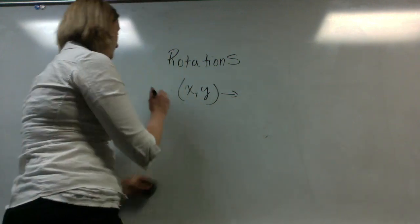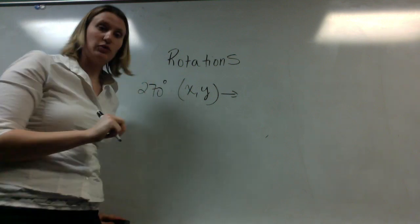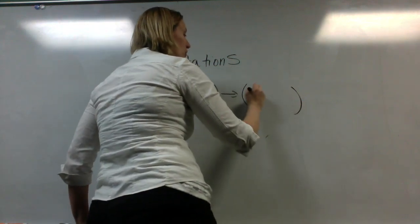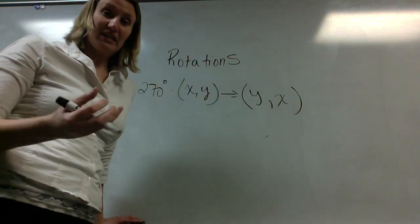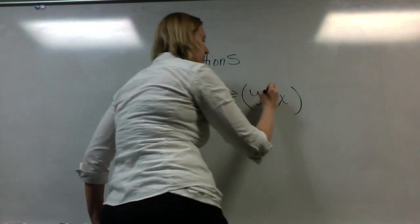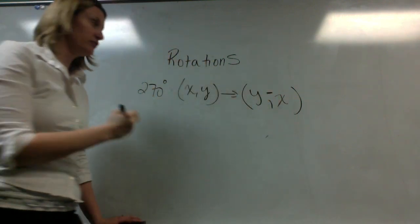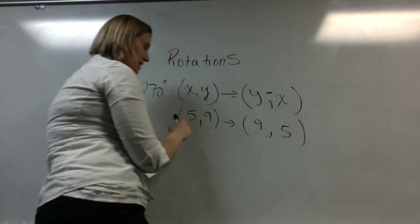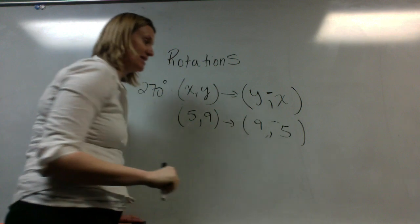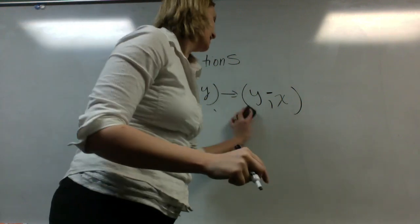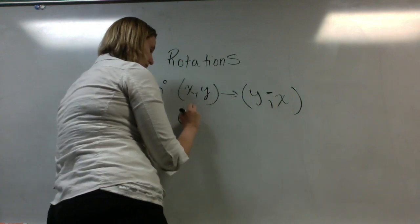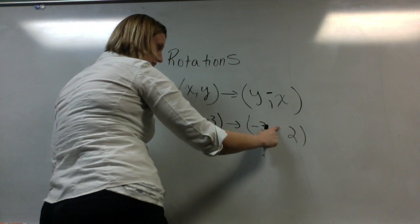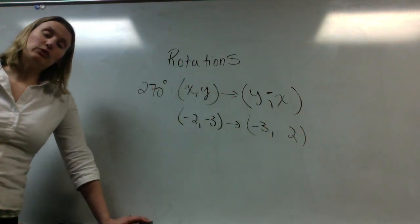270 degrees — if I want to rotate a point 270 degrees. 270 is three 90s, so it is going to be similar to the rotation of 90 degrees. We are going to switch the x and y, just like we did with the 90-degree rotation, but instead of the opposite of y, we're then going to take the opposite of x. So if I have coordinate point (5, 9), I will switch those coordinate points and then do the opposite of that value, making it negative. If I have (-2, -3) and want to rotate that 270 degrees, I flip the points and then do the opposite of my original x, so that becomes positive 2. That's how you rotate a point 270 degrees.